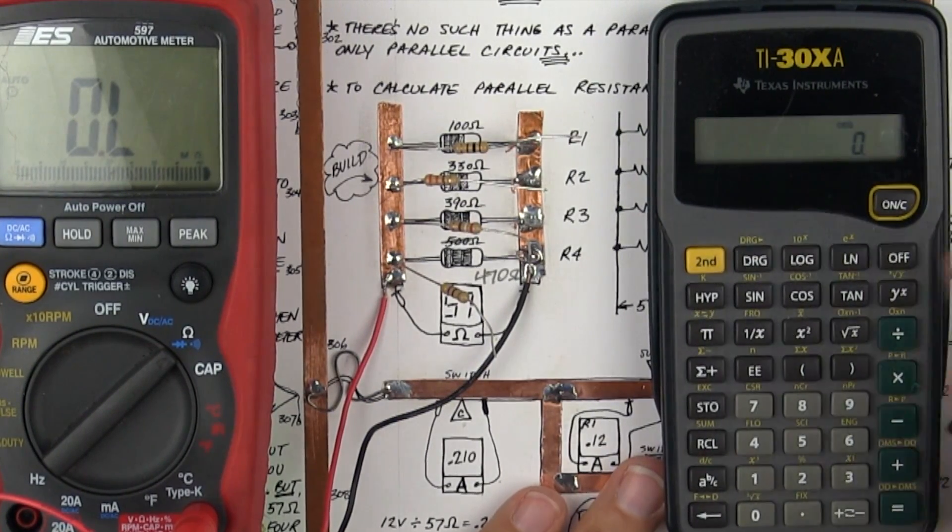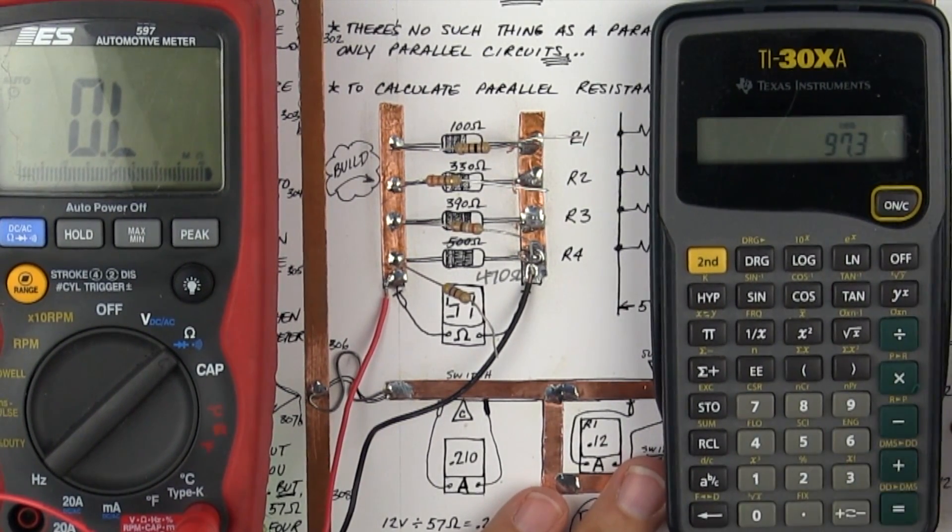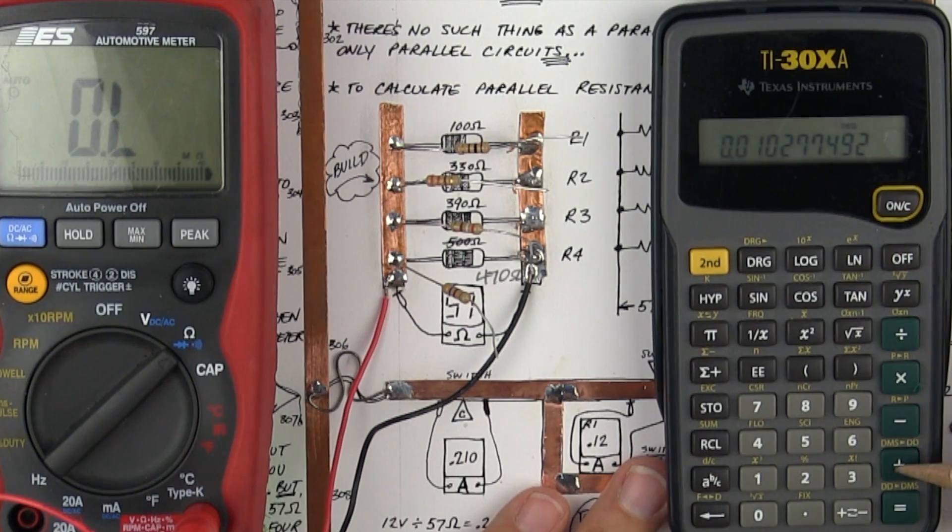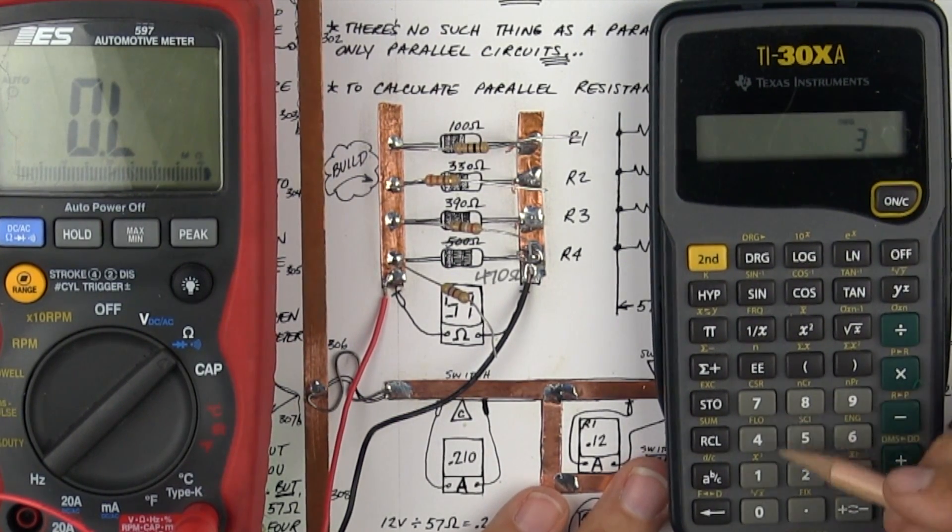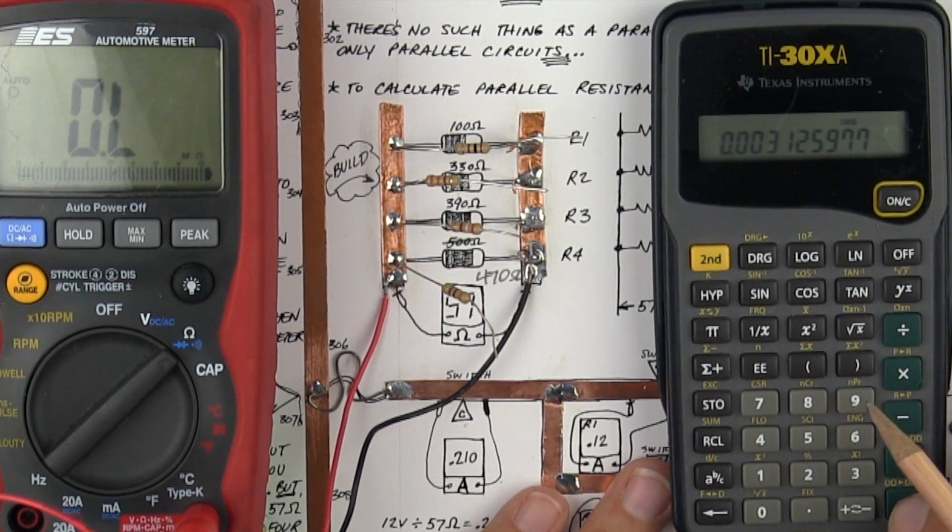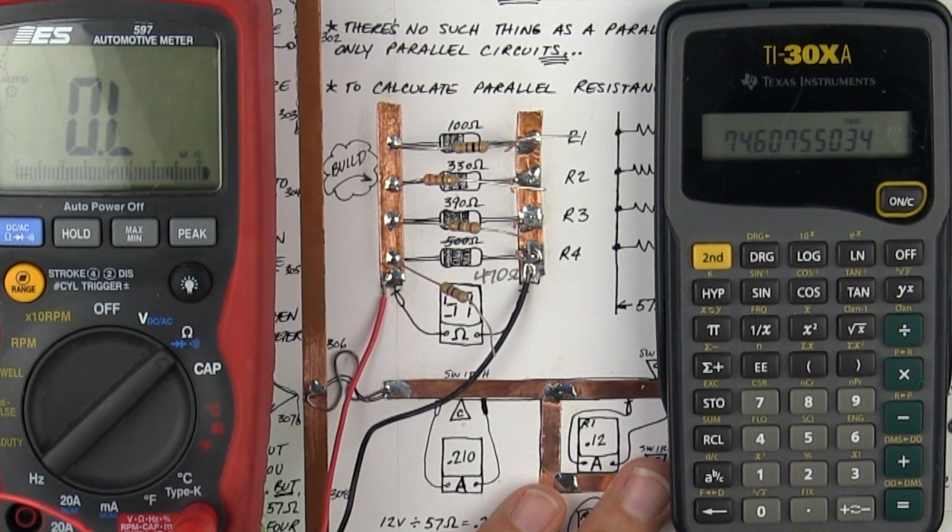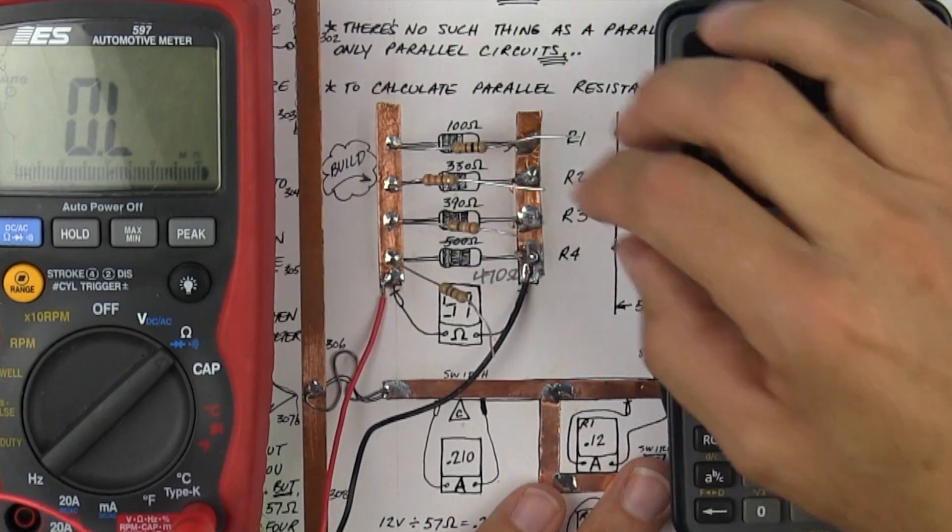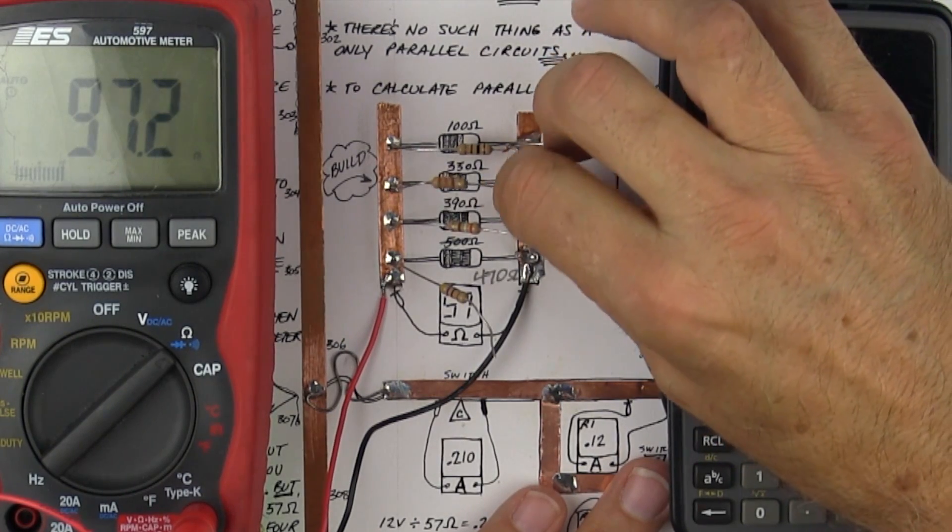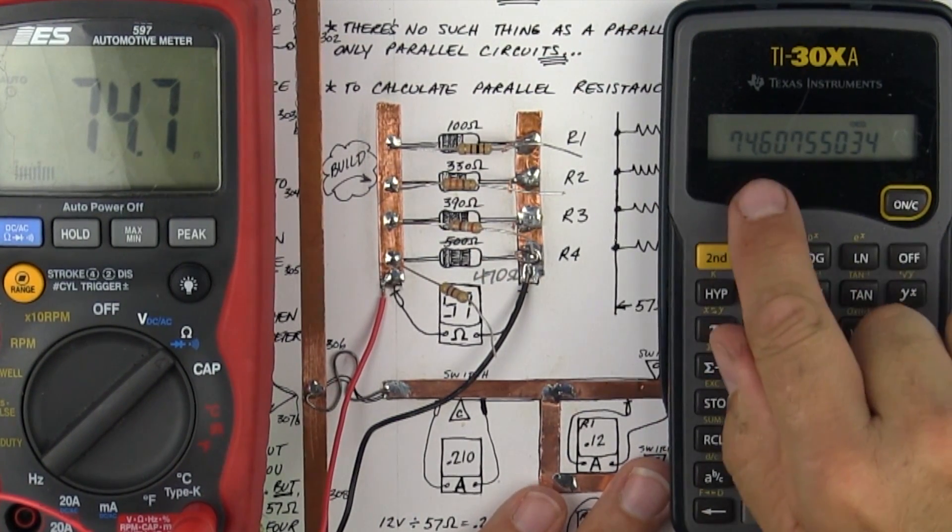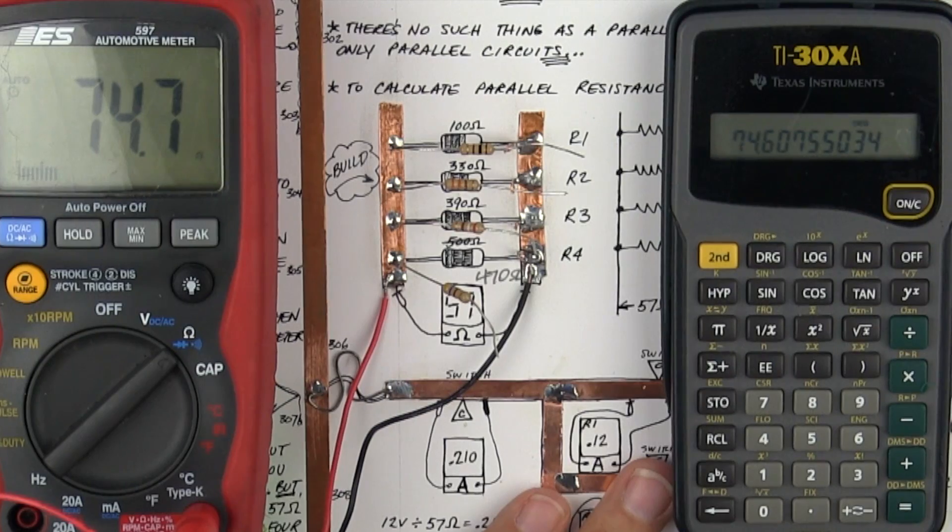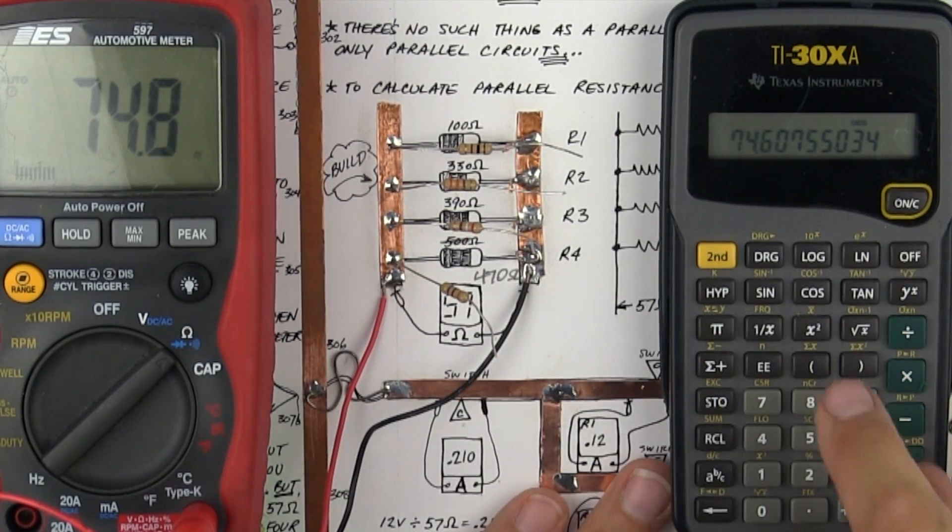So I'm going to put in 97.3 inverse plus 319.9 inverse equals inverse, and I get 74.6. So the number I'm looking for is 74.6. So I'm going to put resistor 1 in parallel with resistor 2. I get 74.6 in the calculation, and I get 74.7 on the meter. That's what these cards are for. You want to see this after you do this.